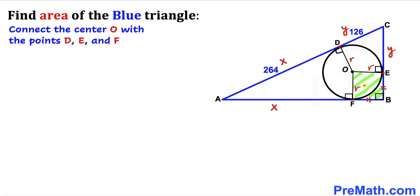Focusing on square FBEO, since all its side lengths are equal, side EB equals lowercase r and segment BF equals lowercase r as well.